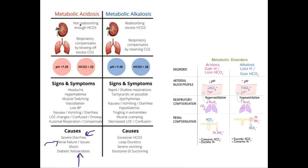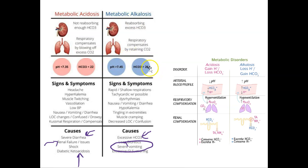Metabolic alkalosis can happen from too much bicarb — if your patient is constipated, for example. It could also happen if you lose hydrogen, as in vomiting, where you're losing lots of HCl and losing hydrogen from your stomach acid. For metabolic acidosis, the pH is low and we expect the bicarb to be low. For alkalosis, the pH will be higher and the bicarb will also be higher.